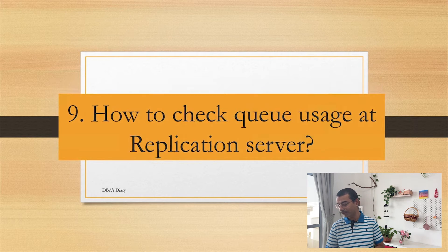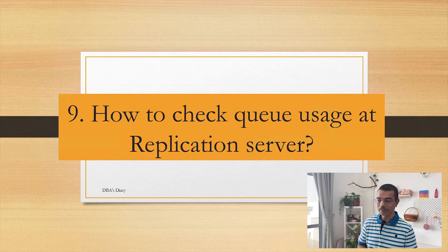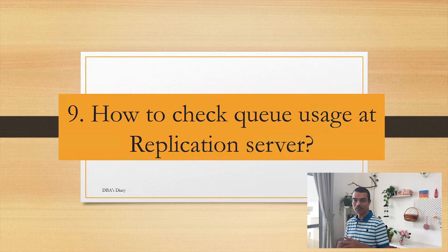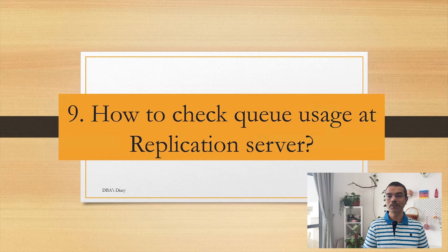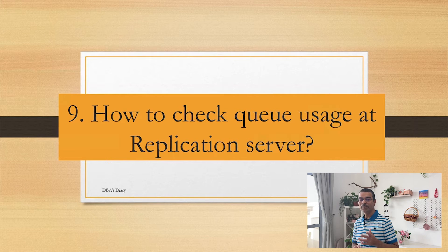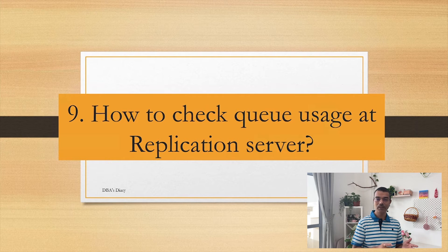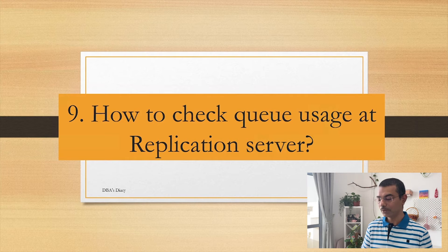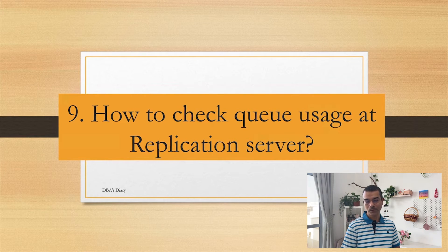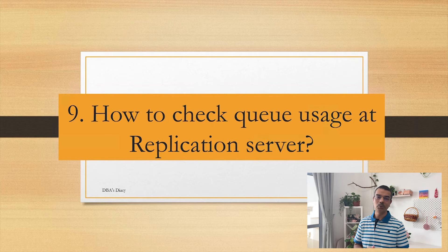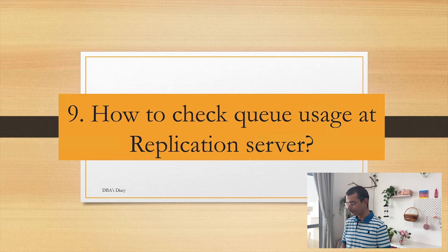How to check queue usage at replication server? You can explain in terms of thread usage — like SQT. You can also explain about disk usage. For disk usage, you can answer in terms of the command running at the replication server level, or you can also run the command at the RSST level. Depending on your experience and use case, you can explain this command, why it is used, when it is used, and how you find out how much usage has already been done and how much free space you have.